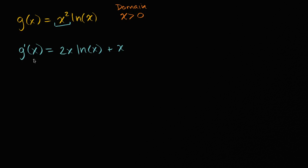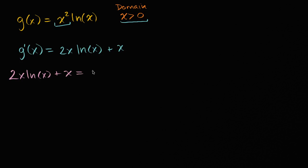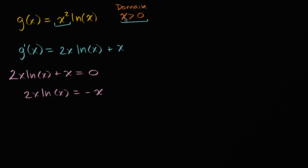Critical points are points in the domain — so x must be greater than zero — where g prime is either undefined or equal to zero. Setting g prime equal to zero: two x times natural log of x plus x equals zero. Subtracting x from both sides gives two x times natural log of x equals negative x. Dividing both sides by two x (valid since x is greater than zero), we get natural log of x equals negative one-half.